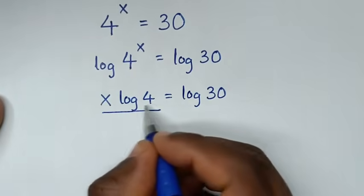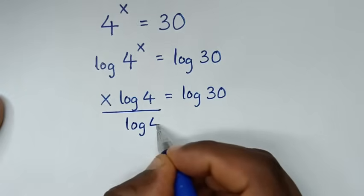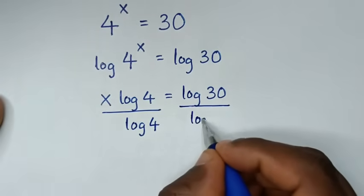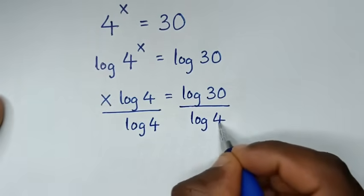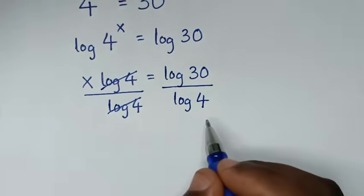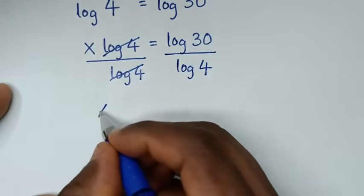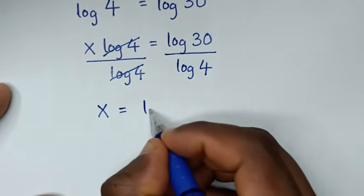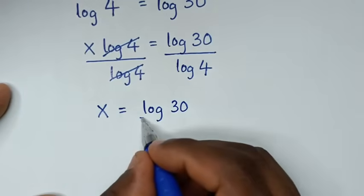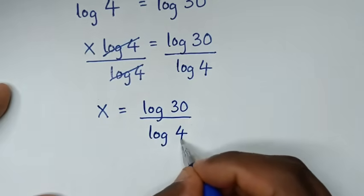Then we'll divide by log of 4 on both sides — log of 4 here and log of 4 here — so these will cancel. Then it will be x is equal to log of 30 over log of 4.